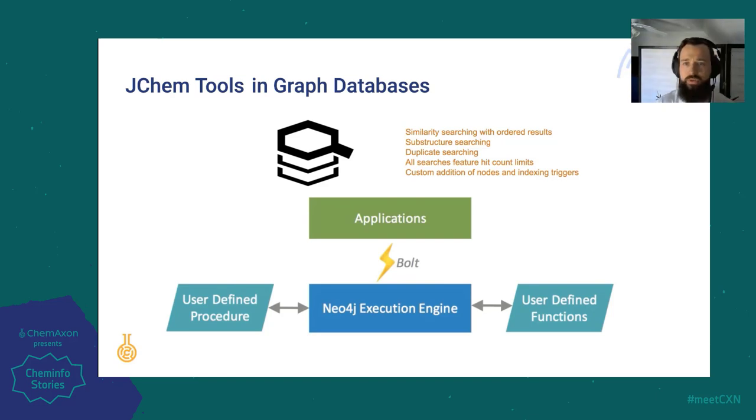Our JChem tools have long been used to provide chemical backbones to generic database systems, as well as providing chemical manipulation and calculation. One of the key features we usually bring is chemical searching. So as part of the constant innovation and new projects undertaken at ChemAxon, we developed a proof-of-concept search cartridge that interfaces with Neo4j and provides you exactly that searchability.